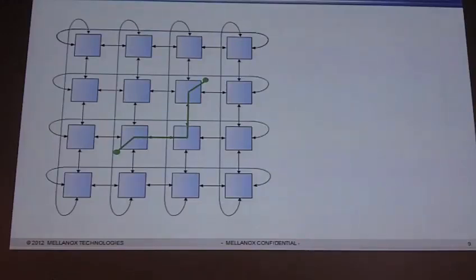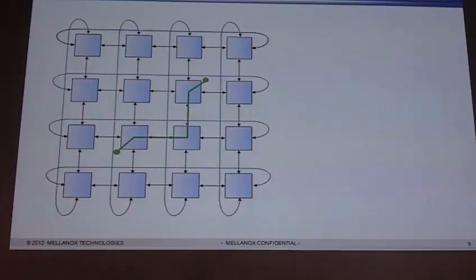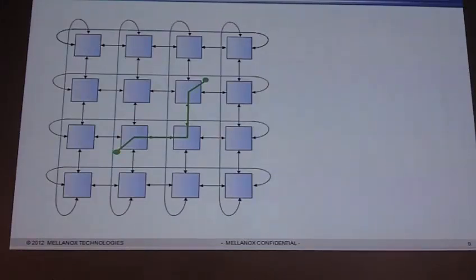There's something in InfiniBand called a subnet administrator, which has all the information on all the connections within the fabric. The subnet administrator gets information from the subnet manager — it's all in the same program. So the subnet administrator knows: if you're going from this node to this particular node, use SL5, for instance. When MPI sets up its job, it queries the subnet administrator to get all the path information, so MPI knows which SL to use and programs that into its connection.